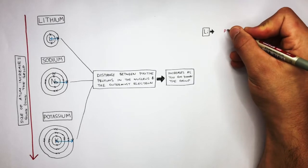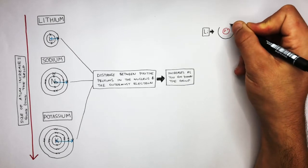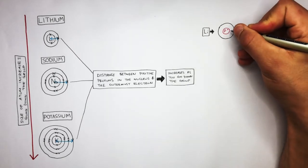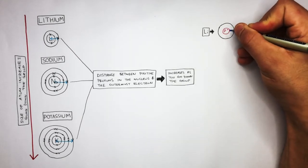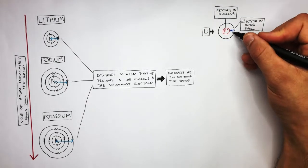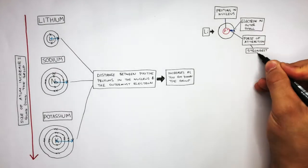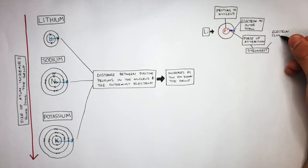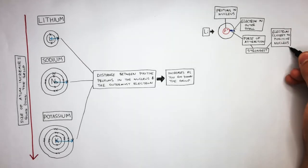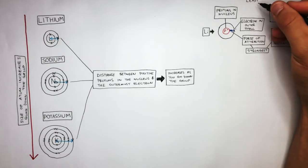This represents the positive nucleus of a lithium atom and this black line represents the outer shell. And these blue lines represent the electrostatic force of attraction between the protons in the nucleus and the electron in the outer shell. The electrostatic force of attraction is the strongest in lithium because the electron is closest to the positive nucleus. This strong force of attraction makes it hardest to lose this electron. Therefore lithium is the least reactive.